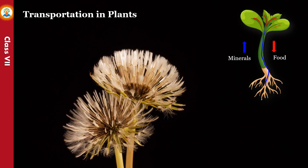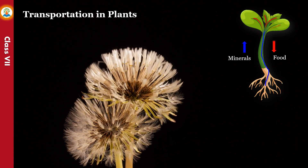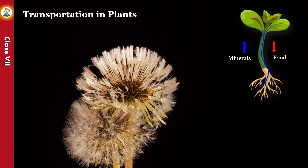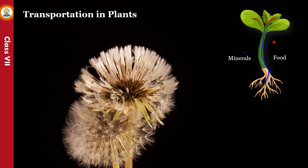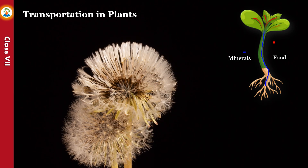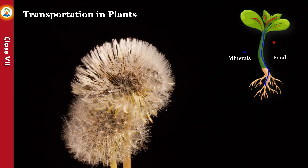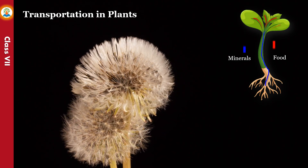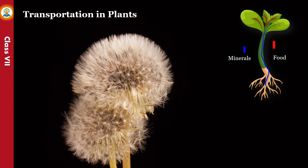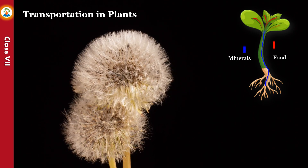Plants absorb carbon dioxide from air through leaves, and solar energy is trapped by chlorophyll present in the cells. As leaves are the food factories of plants, water has to reach the leaves. Similarly, the food synthesized in the leaves has to be transported to the different parts of the plant. Therefore, for the movement of all these substances, a well-developed transport system is required.